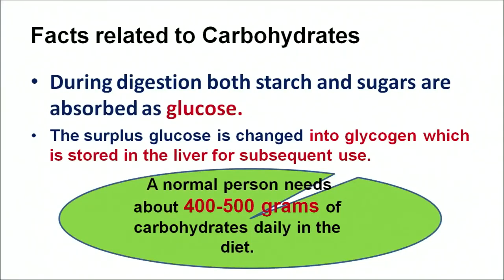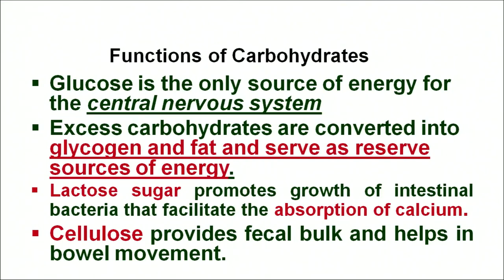A few facts related to carbohydrates: during digestion, carbohydrates — basically starch and sugars — are absorbed as glucose. Excess glucose is converted into glycogen and stored in the liver for subsequent use. A normal person needs 400 to 500 grams of carbohydrate in the diet daily. The functions of carbohydrates: glucose is the only source of energy to our central nervous system. Lactose sugar promotes growth of intestinal bacteria that facilitate absorption of calcium. Cellulose provides fecal bulk and helps in bowel movement.